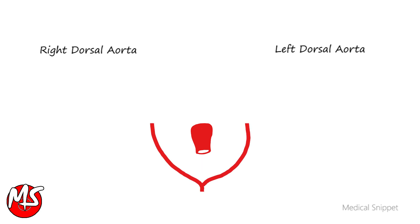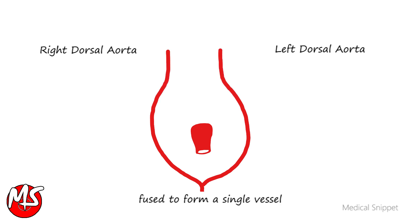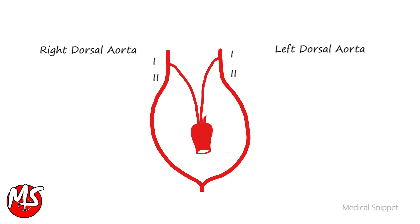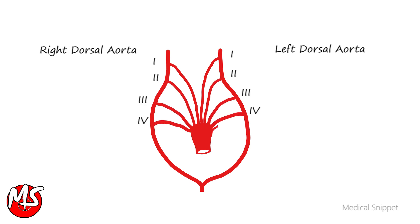The aortic arches arise from the most distal part of truncus arteriosus, called the aortic sac. The aortic arches join into the right and left dorsal aorta. The dorsal aorta, caudal to the aortic arches, fuses to form a single vessel. There are six pairs of aortic arches: the first, second, third, fourth, fifth, and sixth.